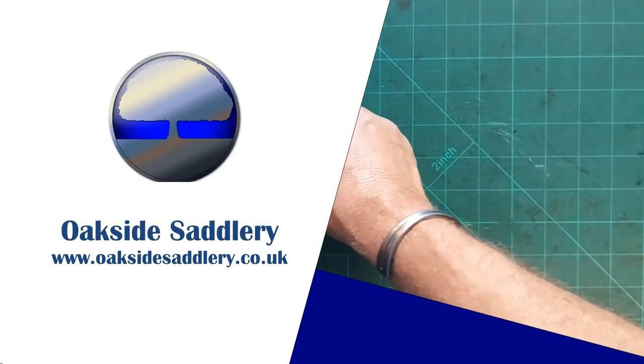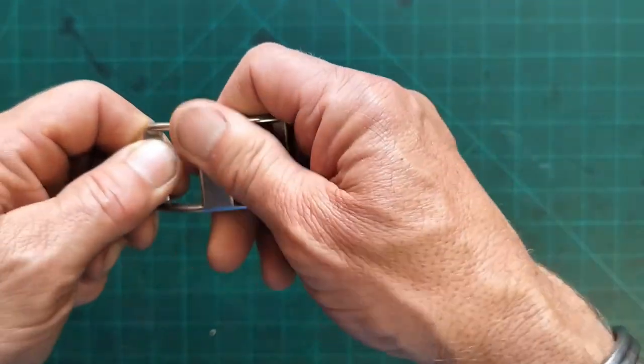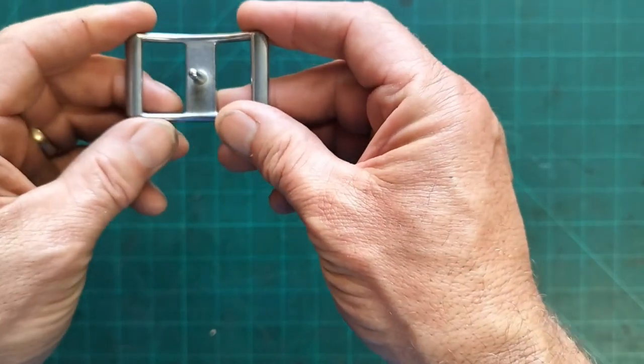So the Conway buckle, it's a lovely simple design, got a slight curve to it. This is the side that you'll have pressing against your waist or whatever if it's making a belt.